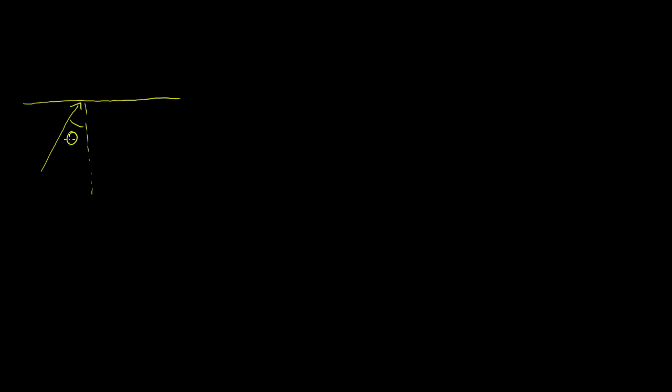We know from the last few videos that we have light exiting a slow medium. So let's say I have a light ray that's exiting a slow medium right over there. This is its incident angle right over there. And the way to visualize this — we're obviously not talking about the true mechanics of light — is to imagine if a car was coming from a slow medium to a fast medium, if it was going from the mud to the road.